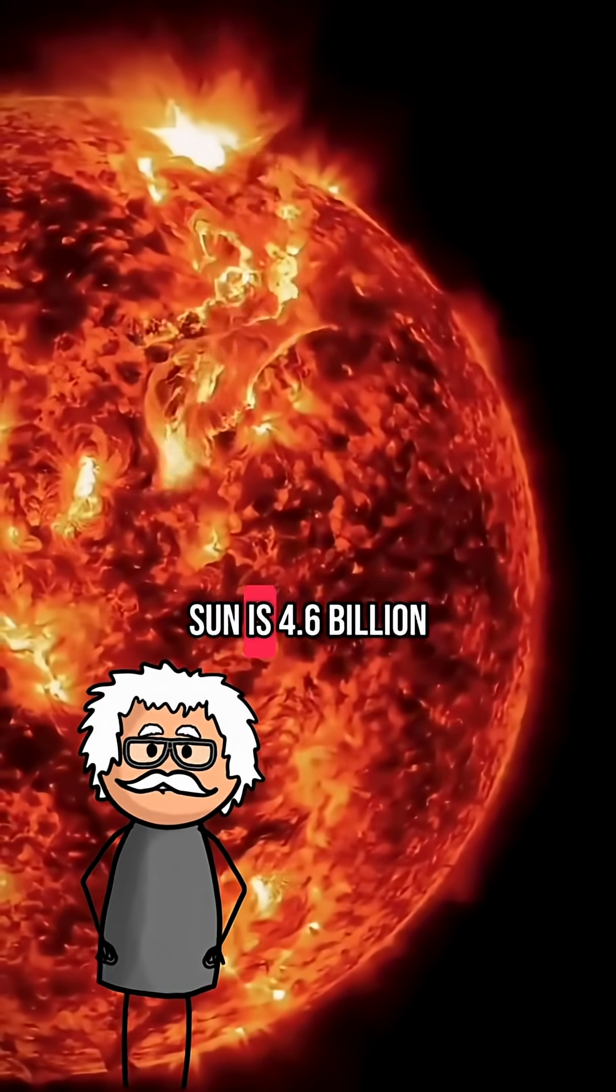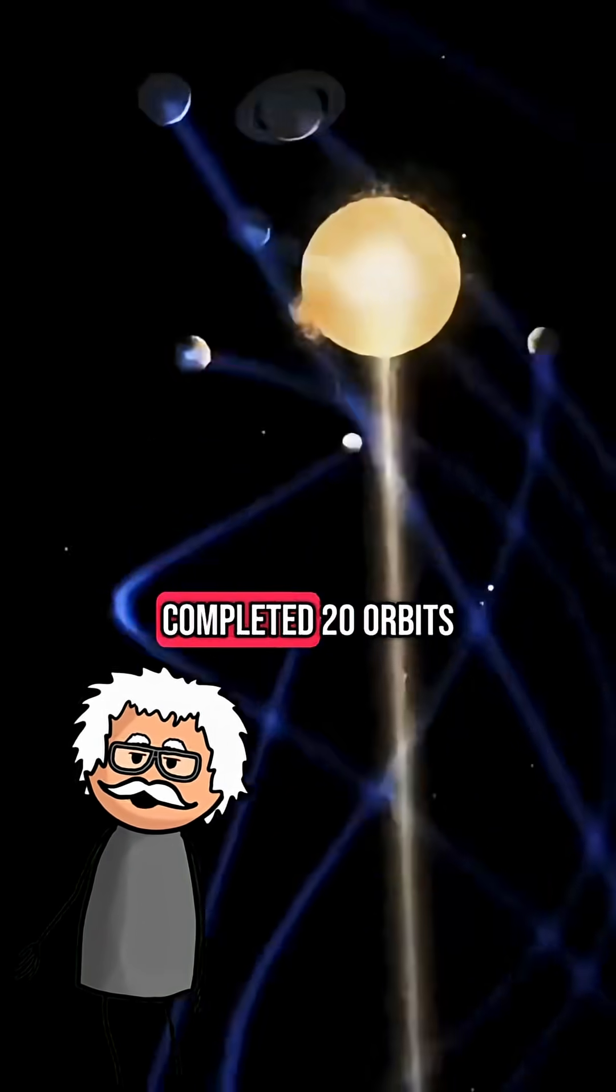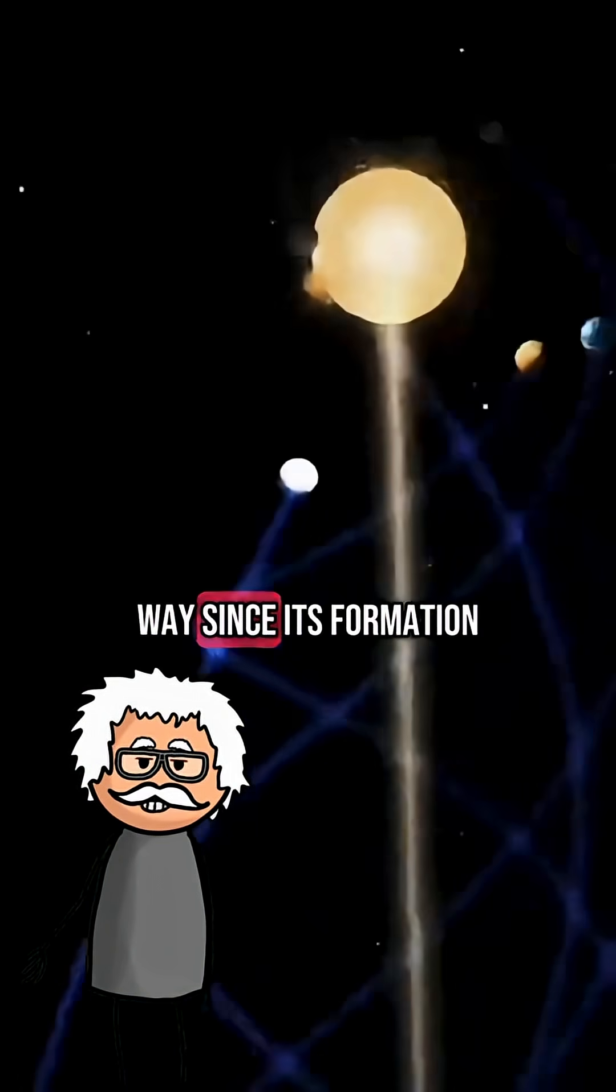Considering that the Sun is 4.6 billion years old, it has only completed 20 orbits around the Milky Way since its formation.